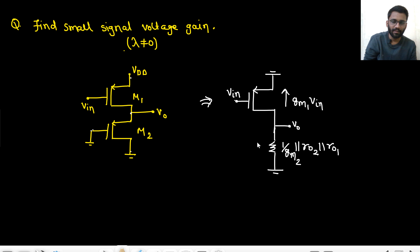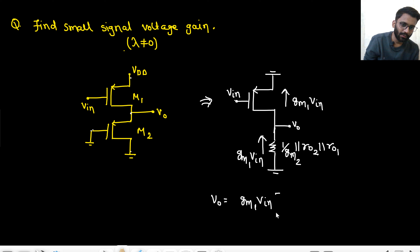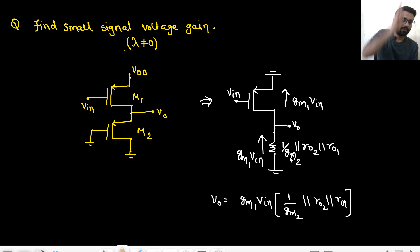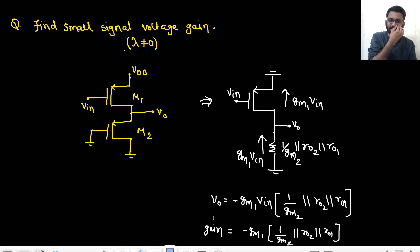This same current gm1·Vin is flowing through the resistance. V0 = current × resistance = gm1·Vin into (1/gm2 parallel with R02 parallel with R01), with a negative sign because current flows upward. So the small signal voltage gain V0/Vin = −gm1 × (1/gm2 ∥ R02 ∥ R01). No small signal model needed — nothing to draw.